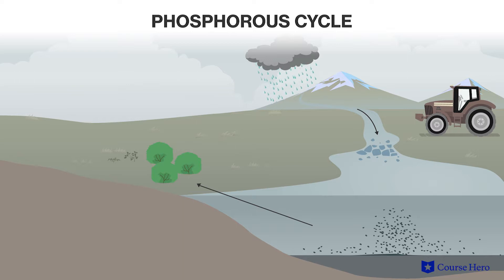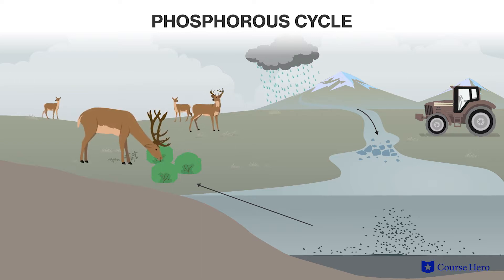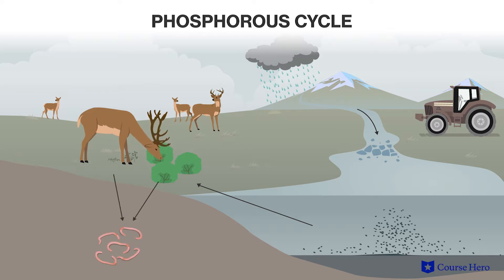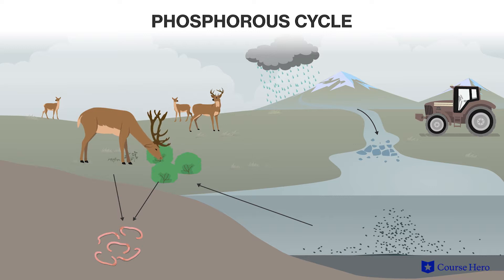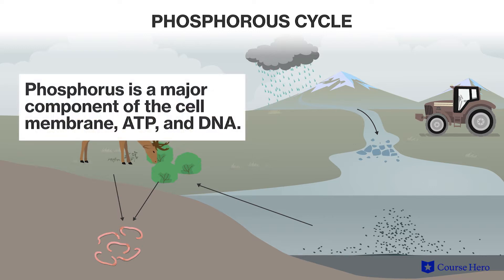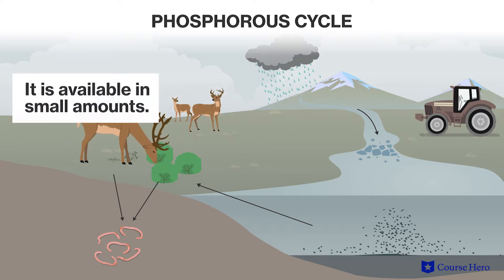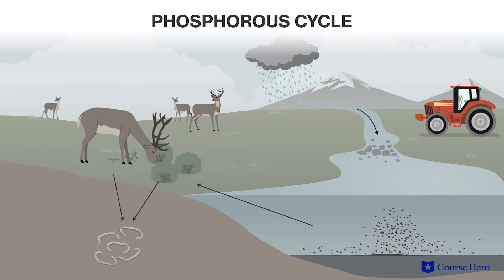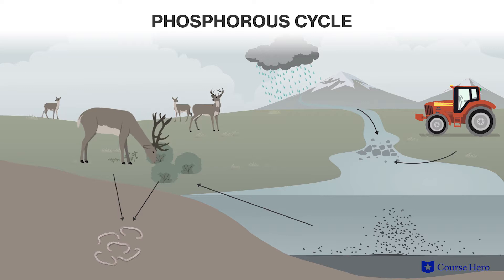Plants absorb phosphates from the soil or water and incorporate them into their tissues. Phosphorus is then transferred to consumers when they eat the plants. Phosphorus is returned to the soil by the action of decomposers that break down animal waste and the bodies of dead organisms. Bacteria then convert organic phosphorus back to phosphate. In freshwater lakes, phosphorus is available in small amounts; however, agricultural fertilizers and other industrial chemicals contain phosphorus, so runoff from farms and industrial pollution can cause an increase in available phosphorus.